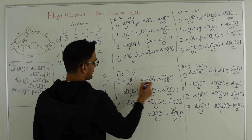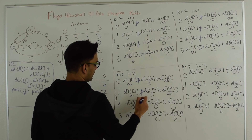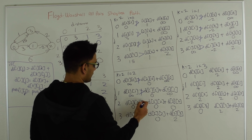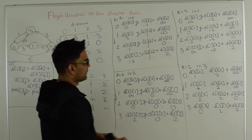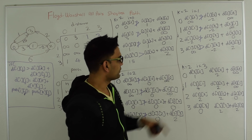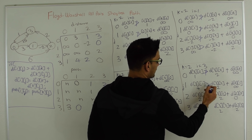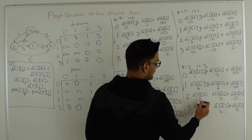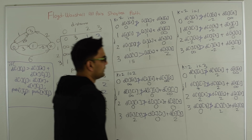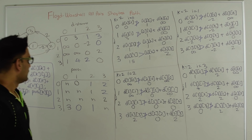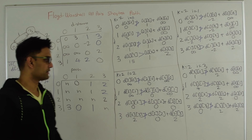For i=2, k=2: Is infinity > 0+infinity? No. Is 0 > 0+0? No. Is 2 > 0+2? No. For i=3, k=2: Is 1 > 2+infinity? No. Is 4 > 2+infinity? No. Is 2 > 2+0? No. Is 0 > 2+0? No. So this is how it looks for the k=2 iteration.